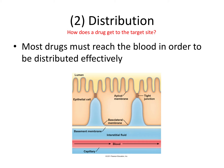Step number two is distribution — once the drug is absorbed into the body, how does it get to the target site? Most drugs must reach the blood in order to be distributed effectively — the highway to the rest of the body. Topical drugs are an obvious exception. But once in the blood, systemic drugs travel and distribute to various tissues and body water compartments according to their specific properties, then exit the blood through the endothelium of the capillaries, through the interstitium, and then through the basolateral membrane of that specific cell type. Generally, a systemic drug will be distributed to vessel-rich organs first, like the heart, brain, liver, lungs, and kidneys.